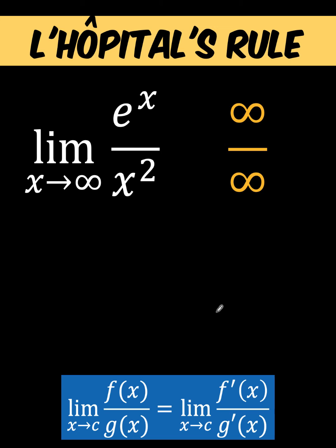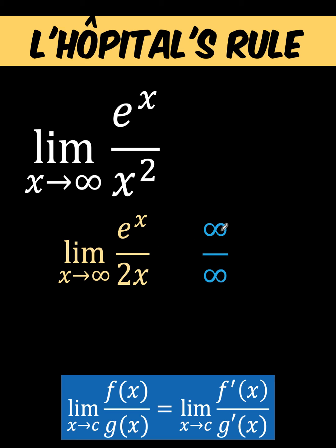So applying now this rule, we take the derivative of the numerator and its derivative is itself, and the derivative of x squared is 2x. Now, substituting infinity to x, notice that the numerator goes to infinity and the denominator also goes to infinity, which is again indeterminate.